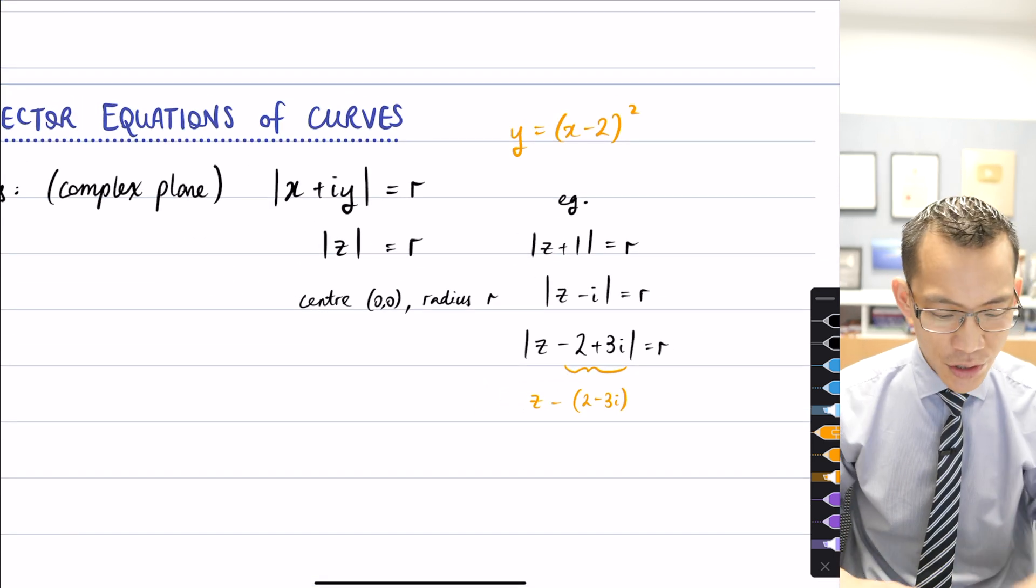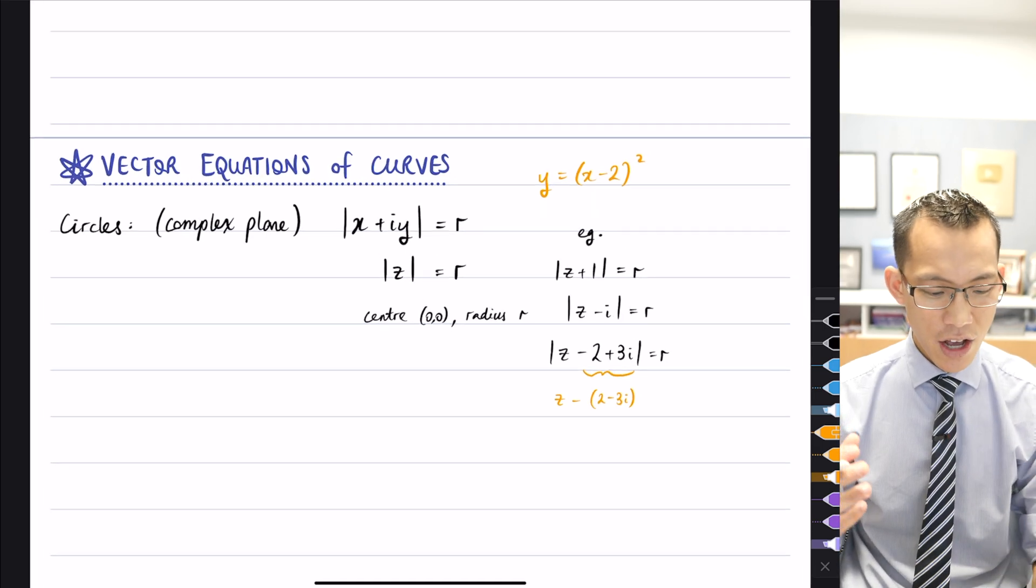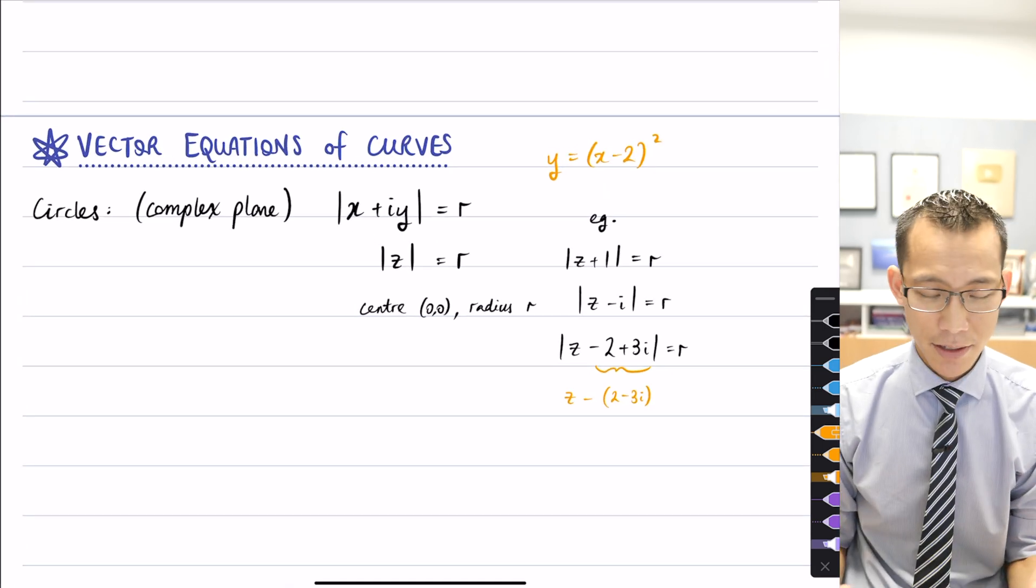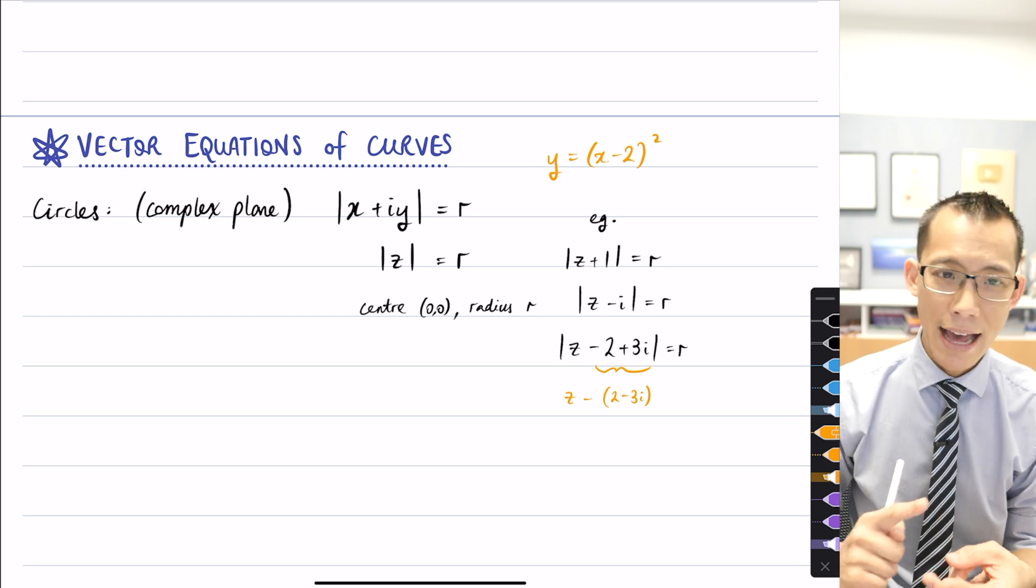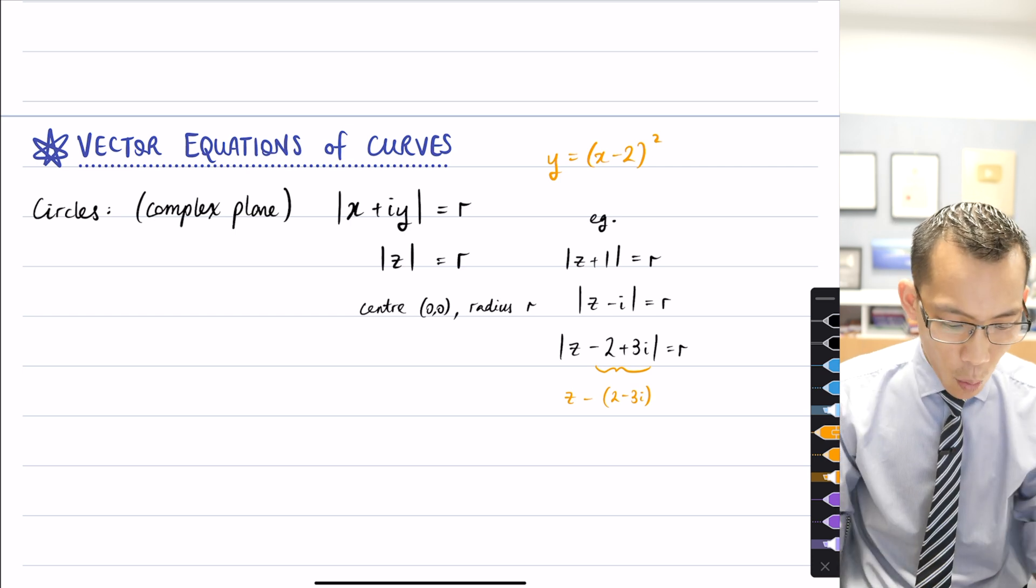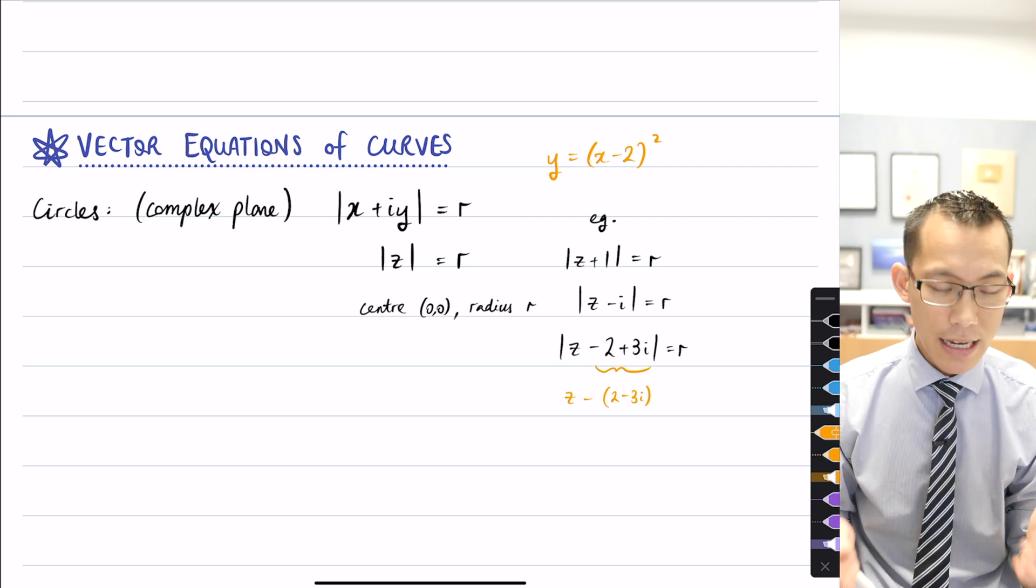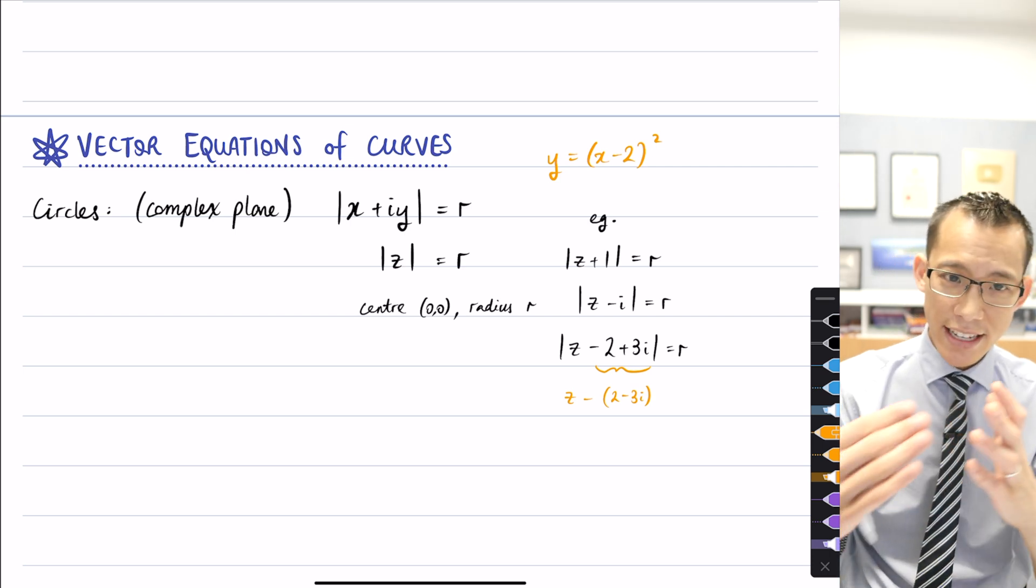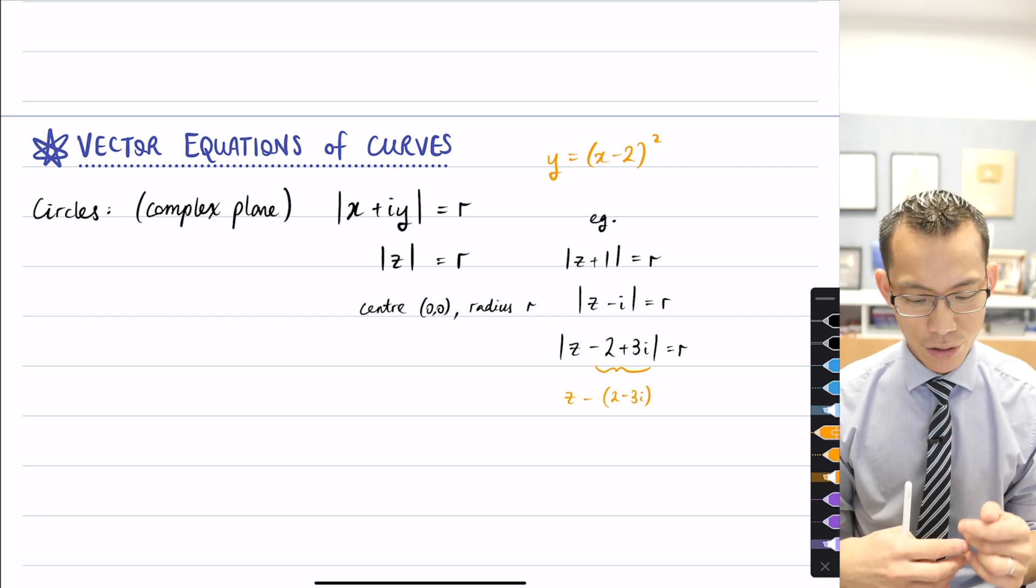Now, this is what we did in the complex plane. And what I want to point out to you is that complex numbers, they're vectors. There's a direction, and there's magnitude. And so this way of writing circles in the complex plane directly translates into how to do, number one...